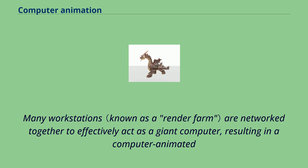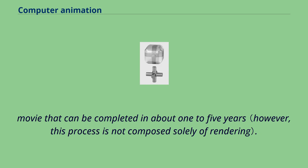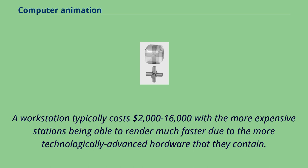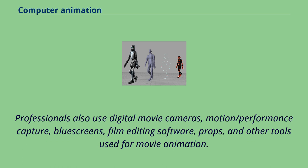Many workstations are networked together to effectively act as a giant computer, resulting in a computer-animated movie that can be completed in about 1–5 years. A workstation typically costs $2,000 to $16,000, with the more expensive stations being able to render much faster due to more technologically advanced hardware. Professionals also use digital movie cameras, motion/performance capture, blue screens, film editing software, props, and other tools used for movie animation.